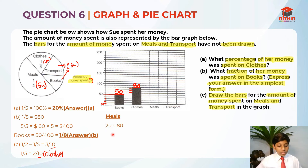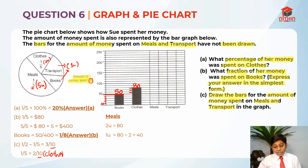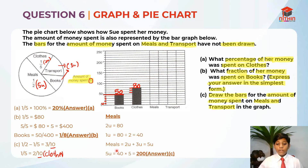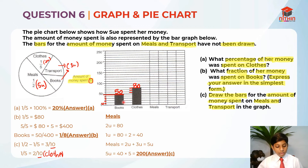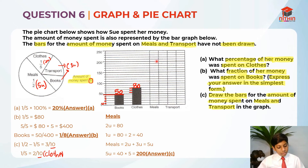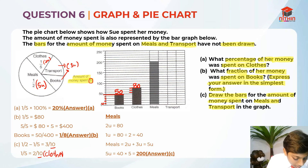Two units equals 80 dollars. So one unit equals 80 divided by 2, which is 40. Meals is five units, so we take 40 times 5, which gives us 200 dollars. So meals equals 200. Now we draw the meals bar at the 200 line on the bar graph. Remember: even if you calculate correctly, you must draw the bar — otherwise you only get the method mark, not the answer mark.